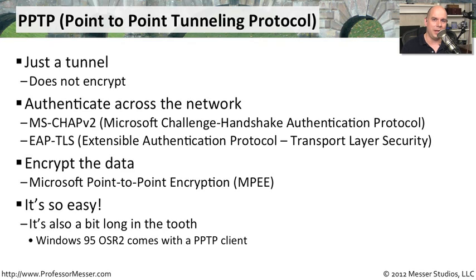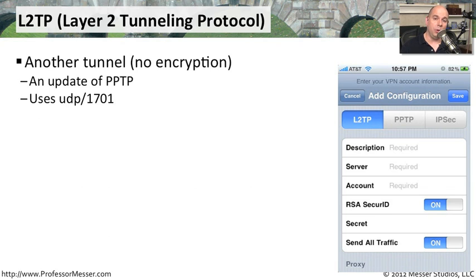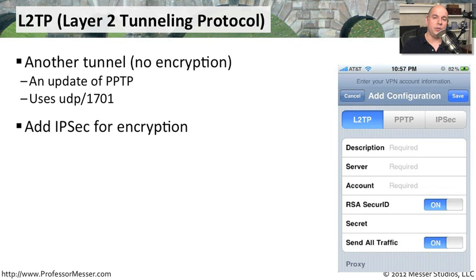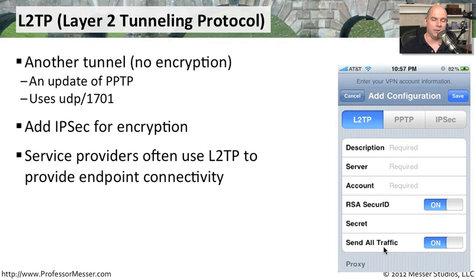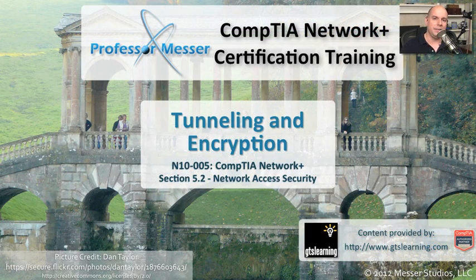A successor to PPTP is a newer protocol called L2TP — Layer 2 Tunneling Protocol. This is an update to PPTP and it uses UDP port 1701 to communicate. You would very commonly use IPSec along with L2TP, where IPSec provides the encryption once you've built the L2TP tunnel. Service providers often use this, and it's built into many operating systems and mobile devices like iOS, where you'd simply add your L2TP configuration with a server account. You can even use multiple methods of authentication, such as an RSA SecureID or a separate secret value, and you can choose to send only certain types of traffic or all of your traffic over that tunnel.